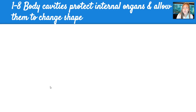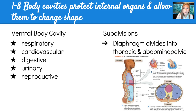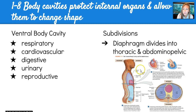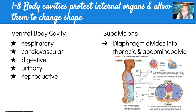The body cavities protect internal organs and allow them to change shape. The ventral body cavity is the biggest and includes the most vital organ systems: respiratory, cardiovascular, digestive, urinary, and reproductive. The subdivisions are divided by the diaphragm, which separates it into the thoracic and the abdominal-pelvic cavities. The thoracic cavity is made up of the pleural and pericardial cavities. Then below the diaphragm you have the abdominal-pelvic cavity, which is made up of the peritoneal, the abdominal, and the pelvic cavities.